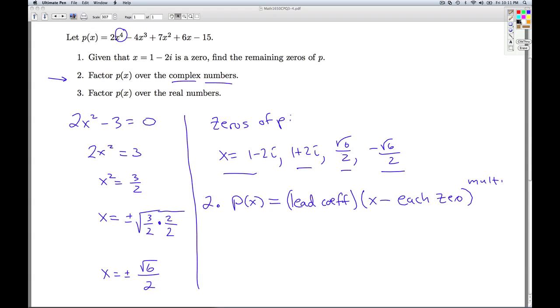So in this case, what do we have? P(x) equals the leading coefficient, which is 2, times x minus the first zero times x minus the second zero times x minus the third zero times x minus the fourth zero.